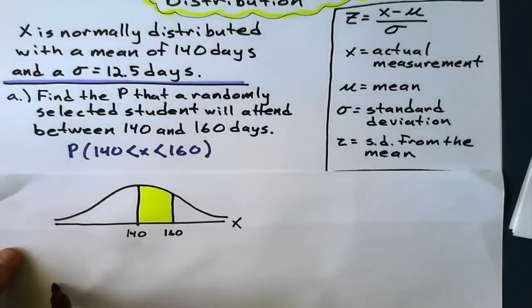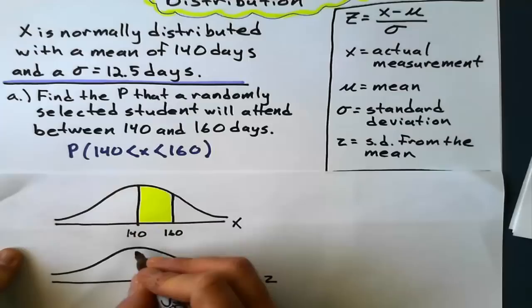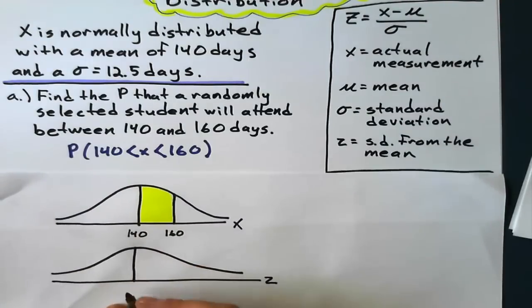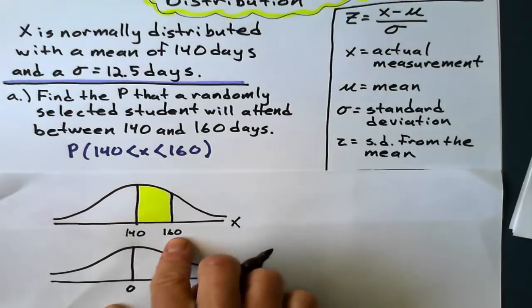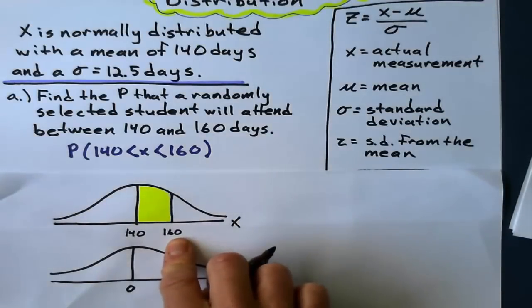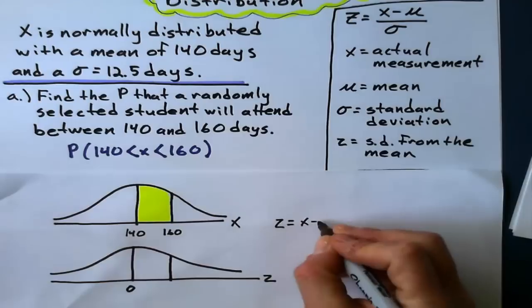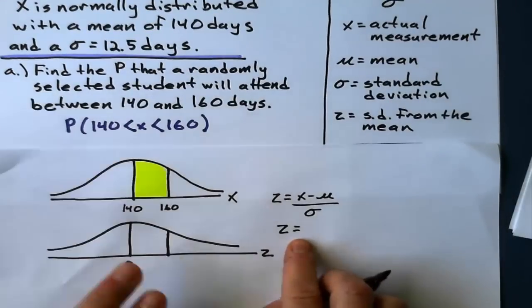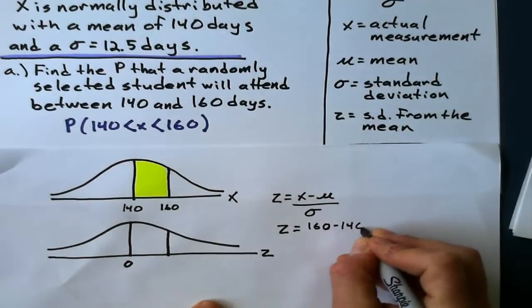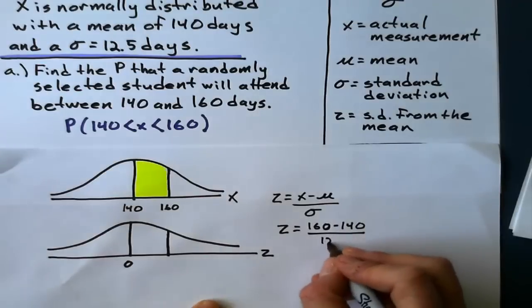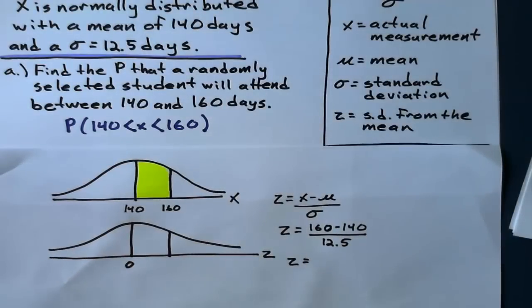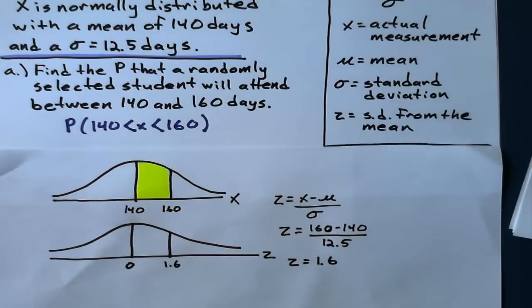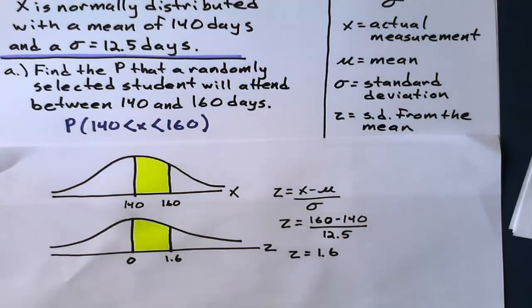I'm going to convert this 160 to a Z value. Z curve. Z mean, the mean of standard normal distribution is 0, of course. And let's convert 160 to a Z value. How many standard deviations is that? So Z equals X minus mu divided by sigma. Z equals 160, take away the mean, divided by the standard deviation of 12.5. And so my Z value is 1.6. So I put 1.6 there. Shade the same area. It should look roughly the same.